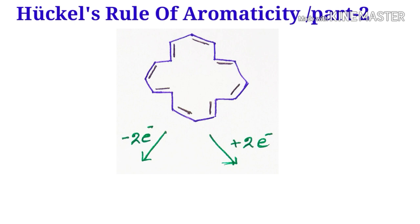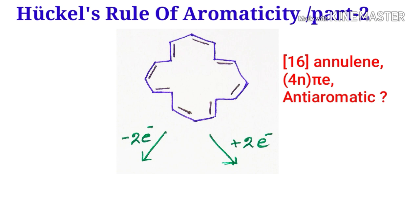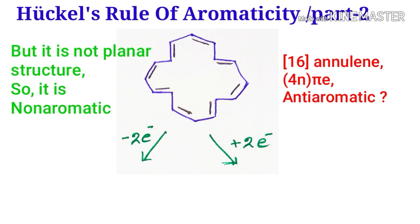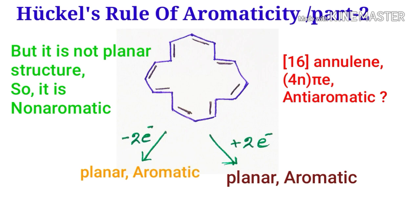Now for 16-annulene: there is an even number of pi electrons — a multiple of 4n — so is it anti-aromatic? No, because it is not a planar structure, so it is non-aromatic. But if we add two electrons into this system, it becomes planar and it is aromatic. And if we remove two electrons from this system, it is again planar and aromatic.